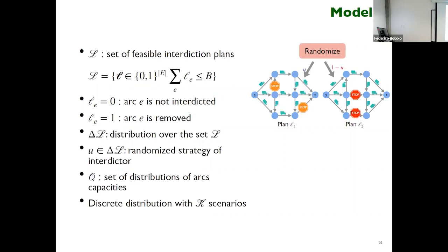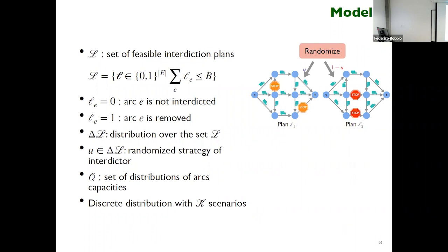A question arose about the feasible set of interdiction plans — specifically whether there are constraints on combinations of interdictions. L is a vector, so you can interdict arcs 1, 2, 3, 4, 5 simultaneously; there are no additional constraints beyond the budget. Any configuration of interdictions up to the budget is feasible, though such constraints could be included in the feasible set if needed.